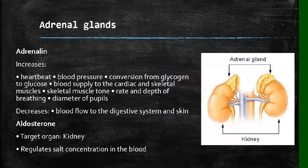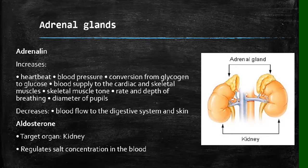Now we're going to look at the adrenal glands. The adrenal glands are found on top of each kidney. These two hormones they secrete are very important because they play a huge role in our bodies. Adrenaline is a hormone that I usually explain using a situation. It is secreted when you are very scared or excited.